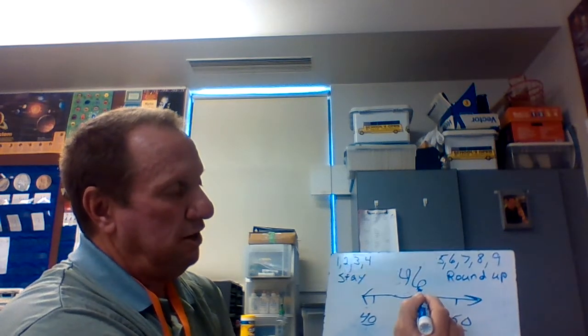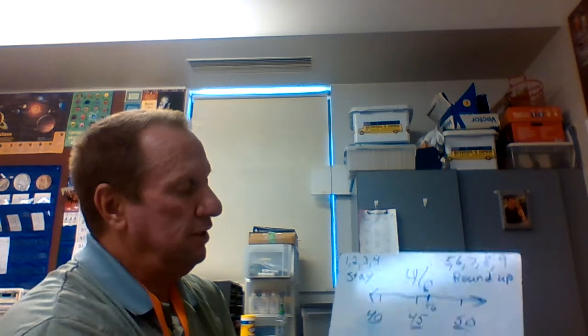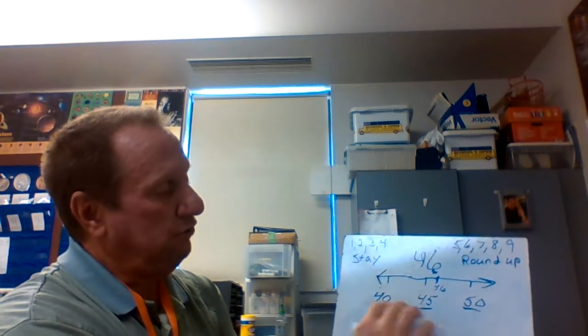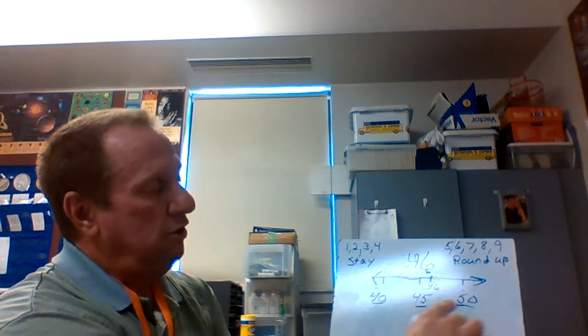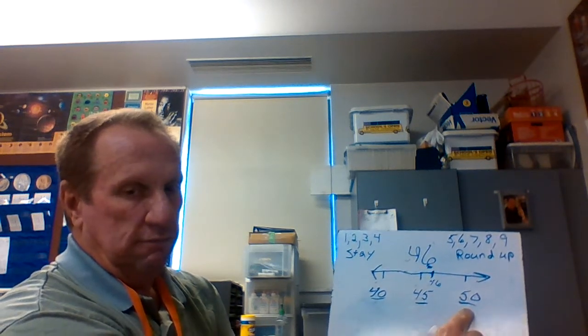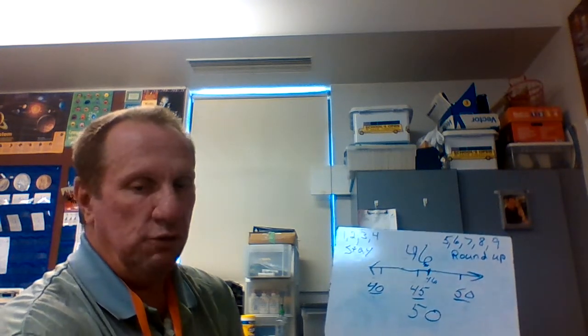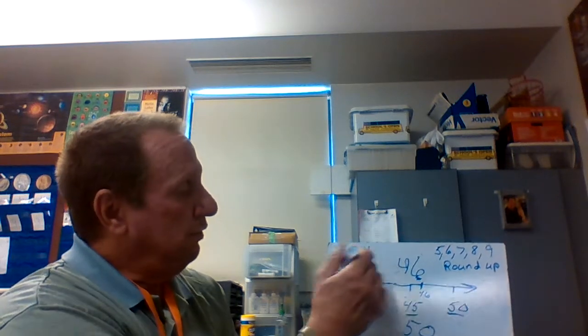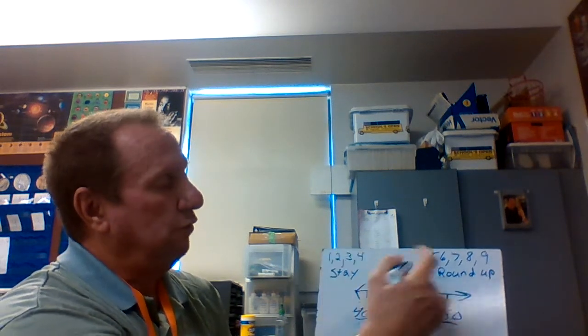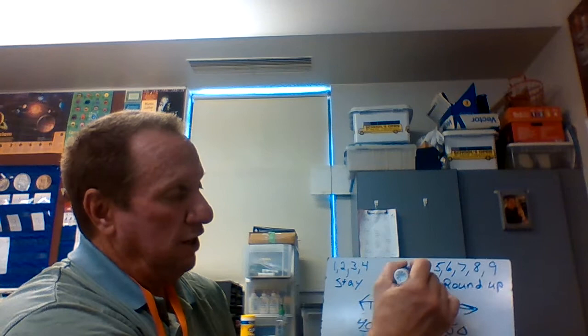I put 46 about right there on the number line. I just look — is 46 closer to 40 or closer to 50? And if you said 50, you were correct. So remember, this little key will help you. If it's a 1, 2, 3, or 4 — or 5, 6, 7, 8, or 9 — it tells you to do one thing or the other. You're looking right now at the number in the 1s column; this number is in the 10s column.